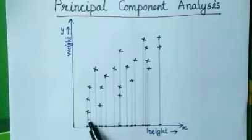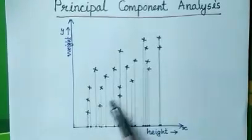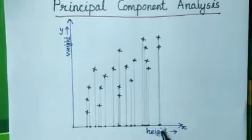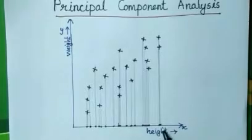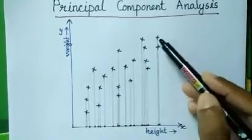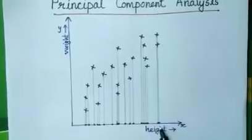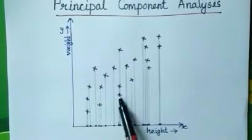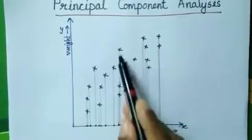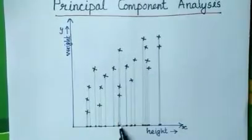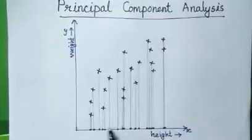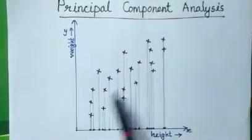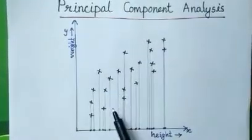You can see that some data points are very close when projected on the x-axis — for example, these two data points are very close together. So it is very difficult to classify these data points.